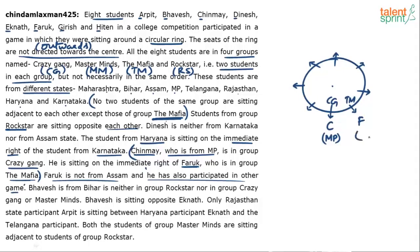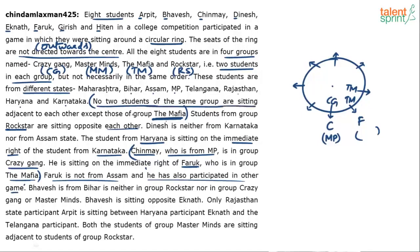Since Faruk is from The Mafia, and no two students of the same group sit adjacent except The Mafia, the student next to Faruk must also be from The Mafia. Since Chinmay (Crazy Gang) is on Faruk's right, the other Mafia member must be on Faruk's left. So both TM positions are together — TM and TM are adjacent.